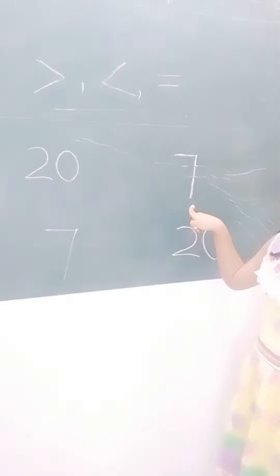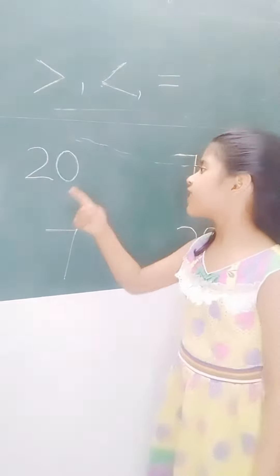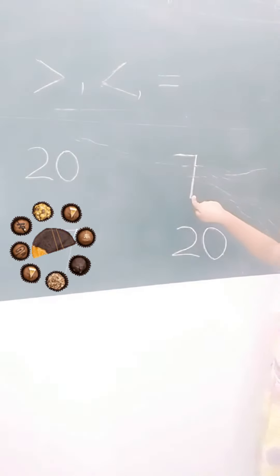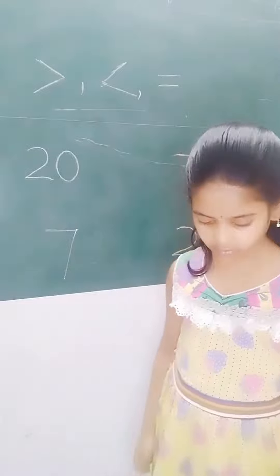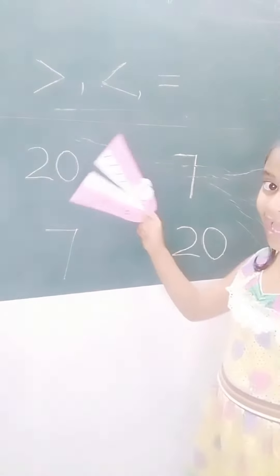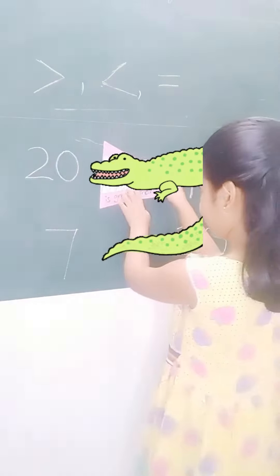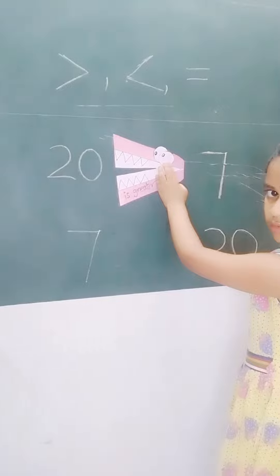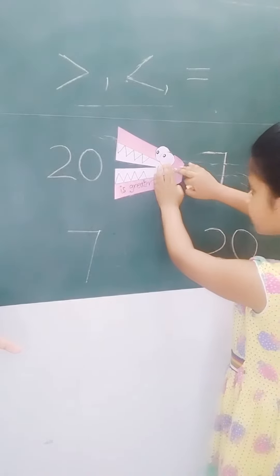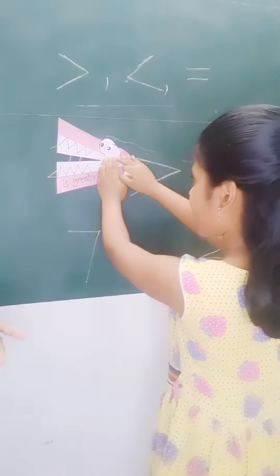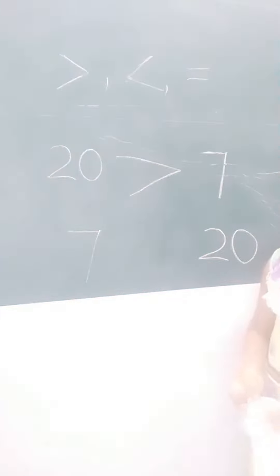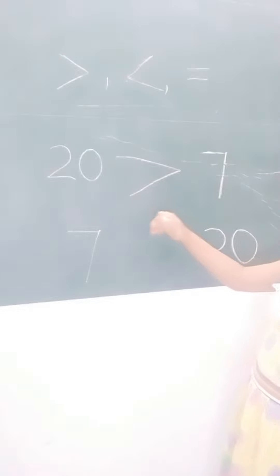Here 20 is on one side and 7 is on the other. Let's assume here 20 chocolates are there and here 7 chocolates are there. One hungry alligator came. It will eat the larger number — that is 20. So this alligator goes to 20. Therefore, 20 is greater than 7.